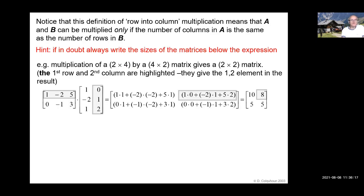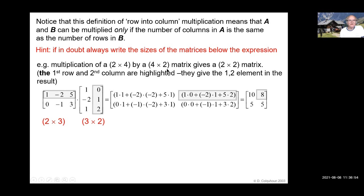It seems a little obscure, as I said, but it makes perfect sense, as we'll see soon. Notice that this definition of row into column multiplication means that A and B can be multiplied only if the number of columns in A is the same as the number of rows in B. If you're in doubt, always write the size of the matrices below the expression. Here's an example involving multiplication of a two by four matrix by a four by two matrix, and the result is a two by two matrix.